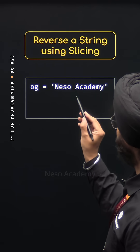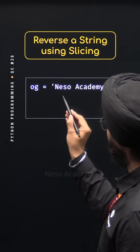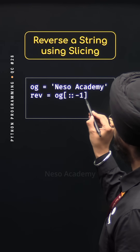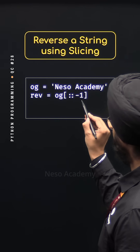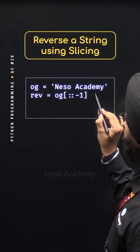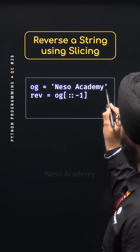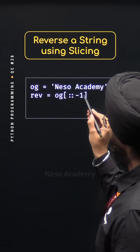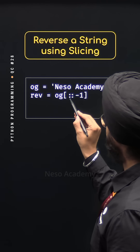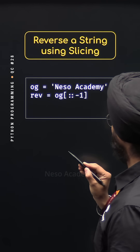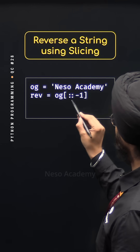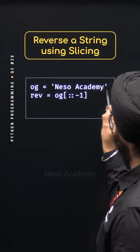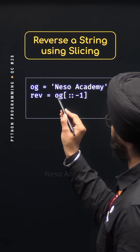For this purpose, we can use string slicing like this. To the OG variable, I have passed the step value which is minus 1. This tells Python to read this string starting from the last character. And here I have not passed the start value and the stop value. This means I am telling Python to read this entire string starting from the last character.